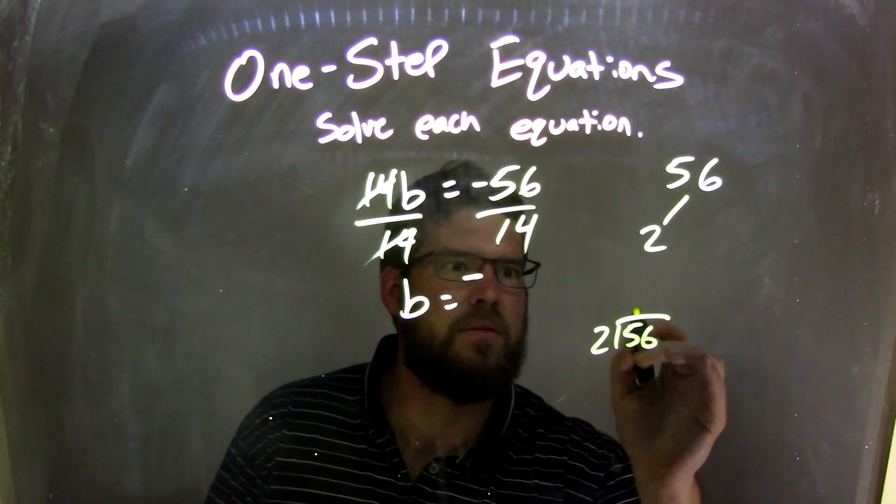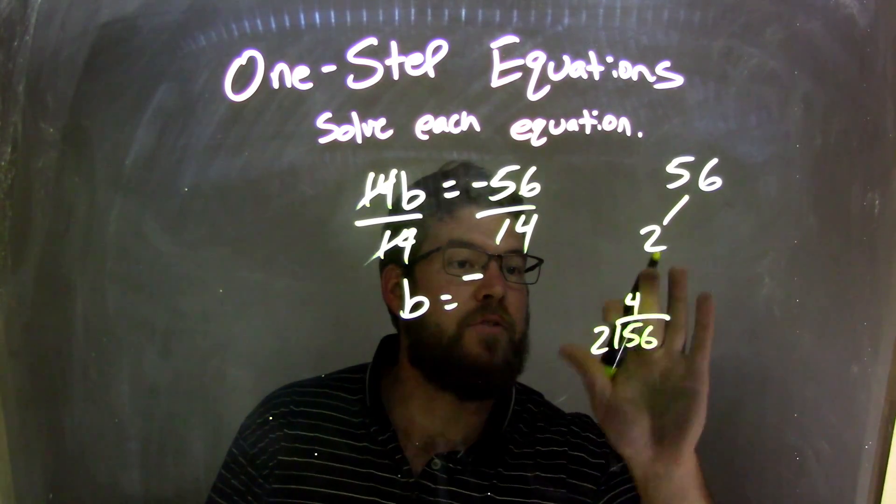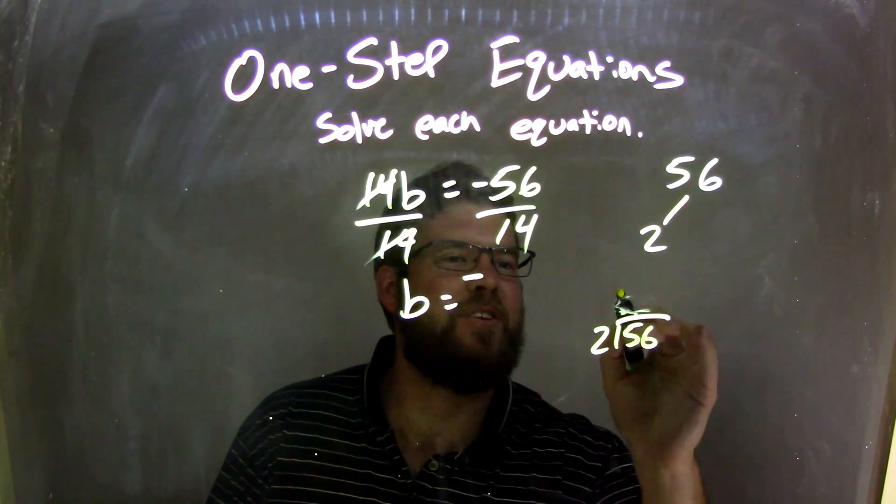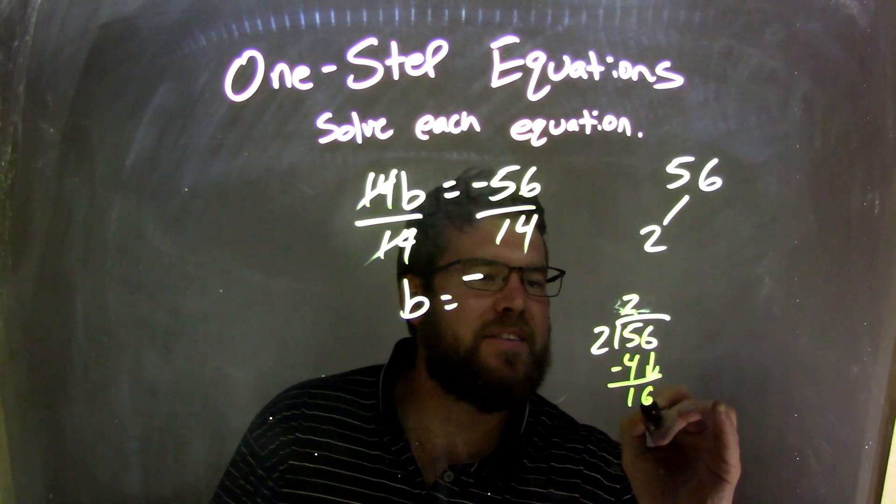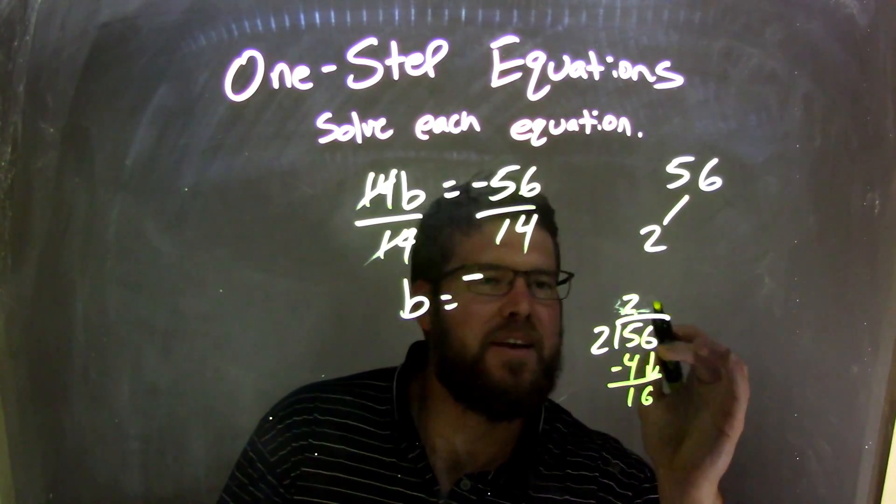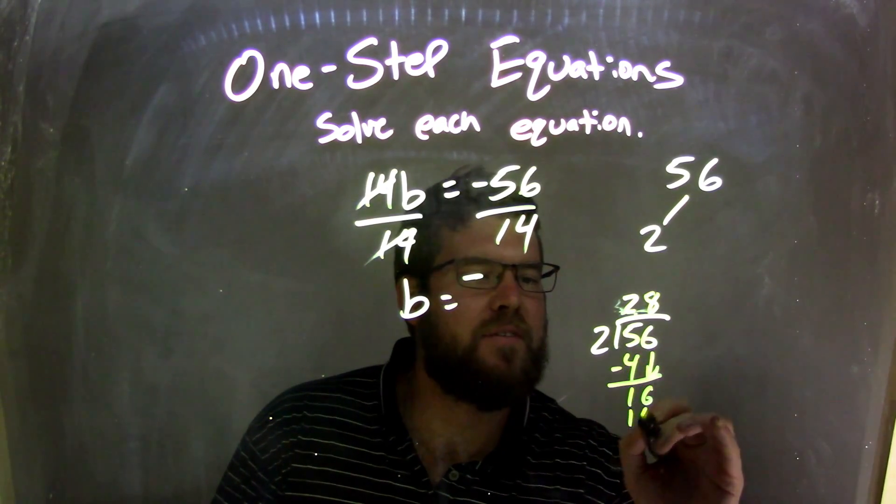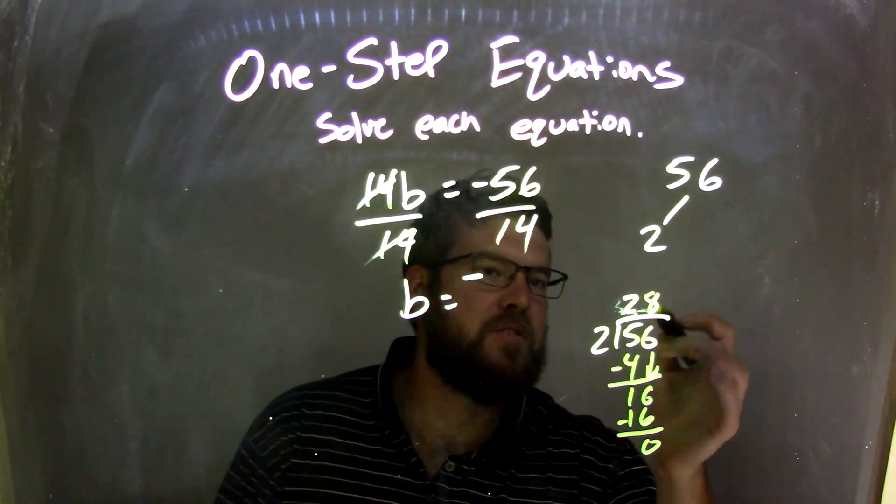2 into 5 is, well, 2. Got ahead of myself there. 2 times 2 is 4. Subtract it, 5 minus 4 is 1. Bring down the 6, and this is easy. 2 goes into 16 eight times. 8 times 2 is 16, and we're good. So, 28.